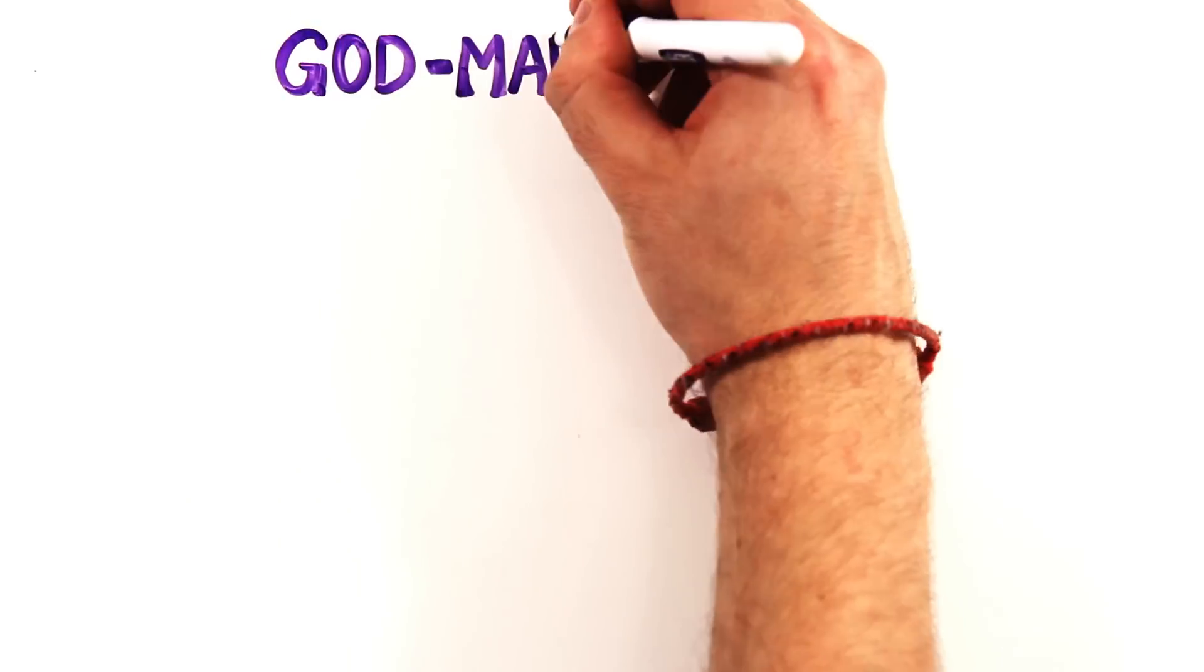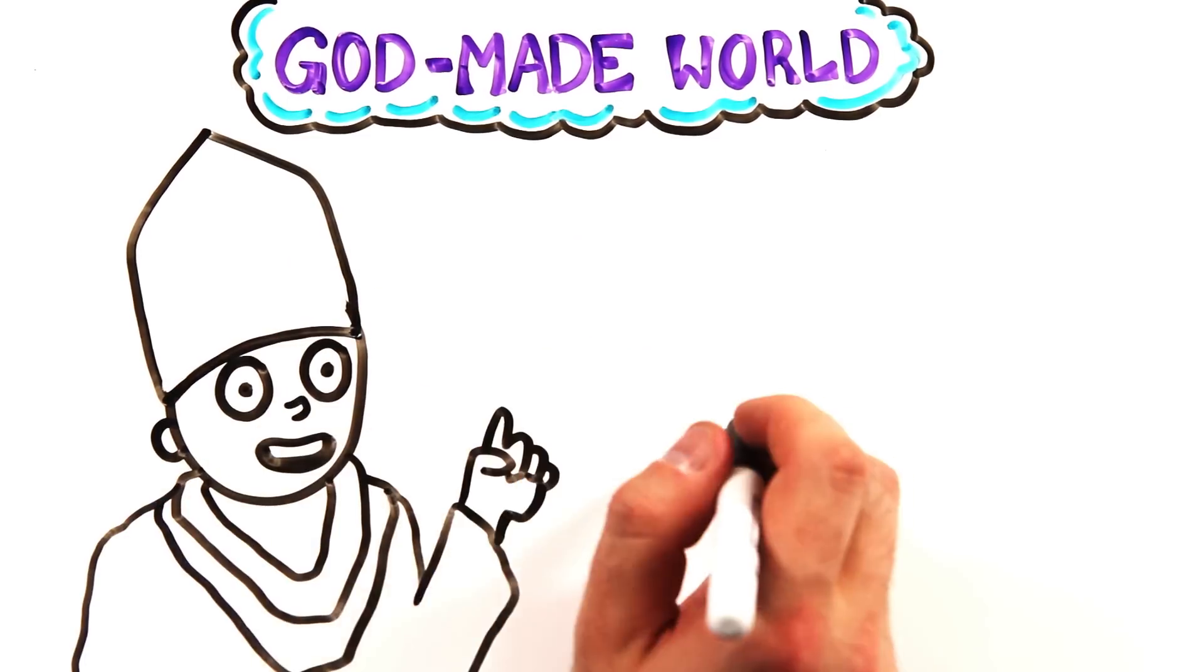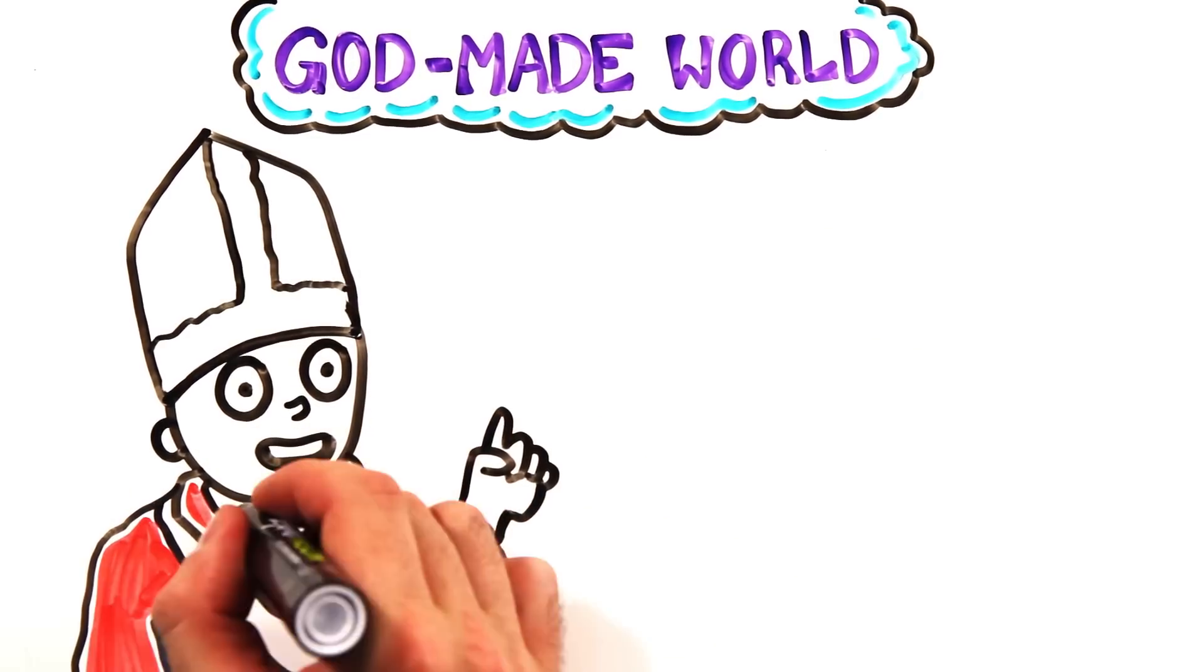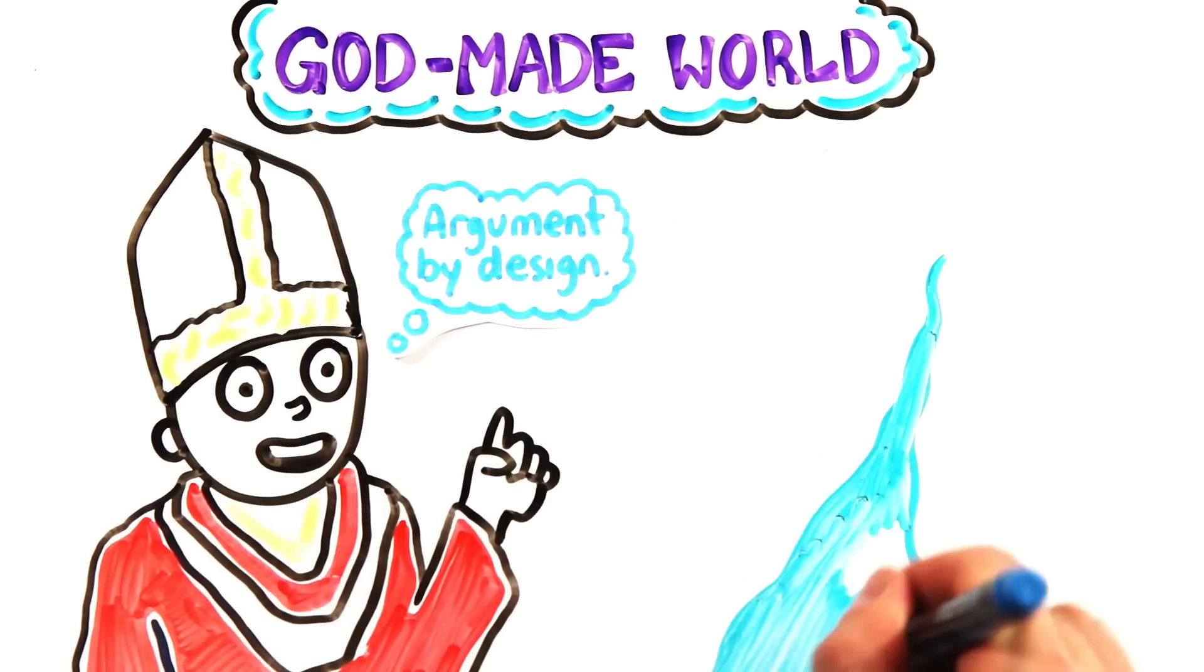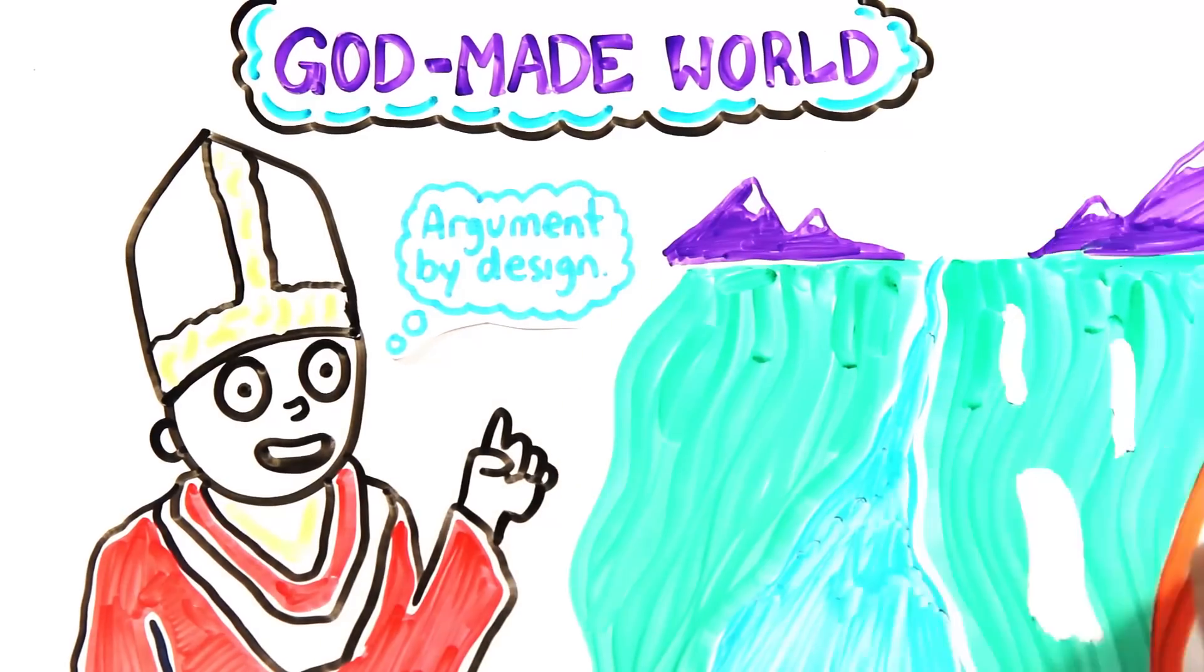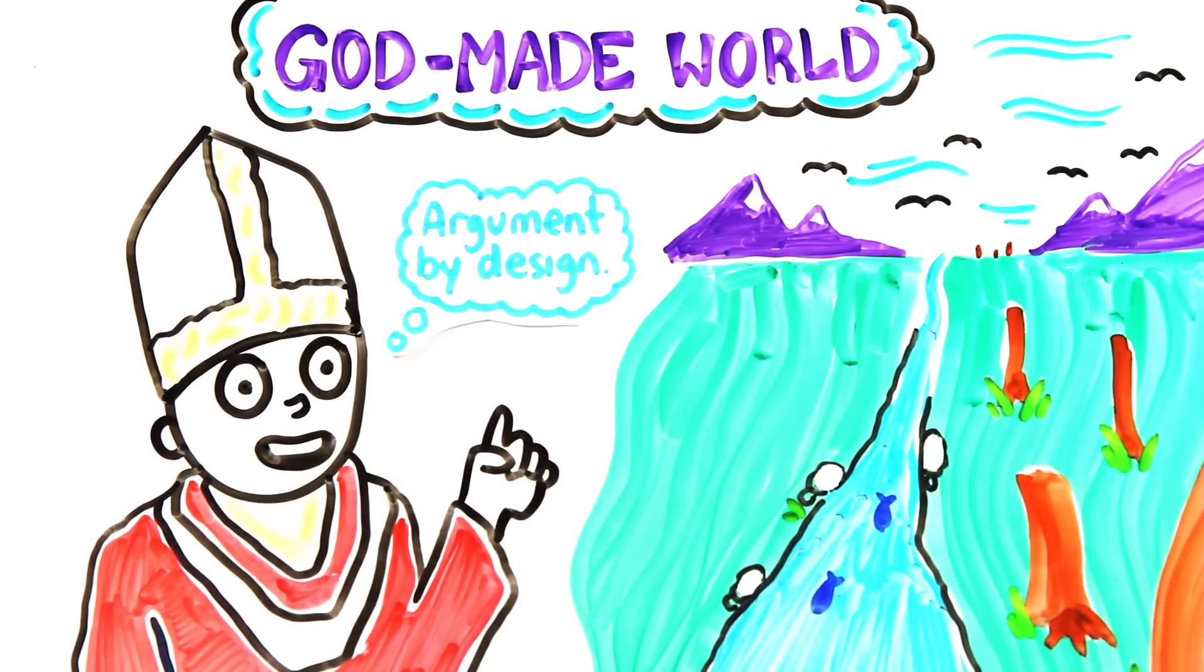The most famous argument in favor of a God-made world using logic and reasoning is the argument by design. Simply put, given how complex and amazing everything around us is, can we really believe that dumb luck put it together? Even from a scientist's perspective, life is amazing, incredibly rare, and took a monumental amount of steps, chance happenings, and time to come about.